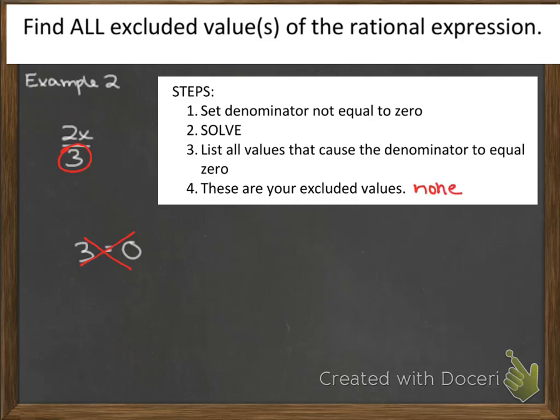So let's look at an example where we do have a variable in the denominator. So in this problem, our denominator is 3x. This time, if I set 3x equal to 0, since I do have that variable, I can solve for x.